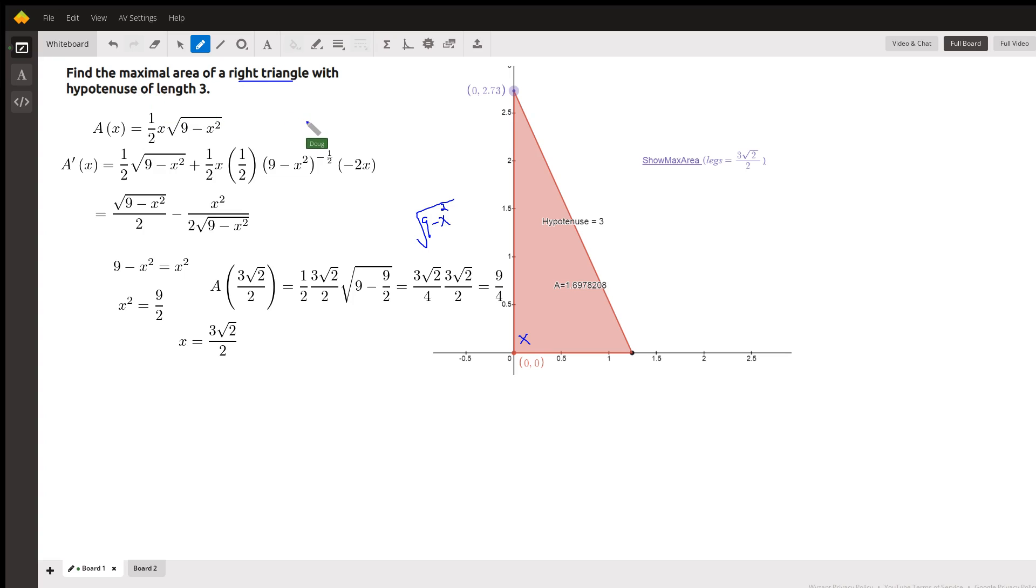Okay, so what we need is a function that calculates the area based on, well, these kind of got moved out of position. If this leg is X, then this leg is the square root of nine minus X squared by the Pythagorean theorem.